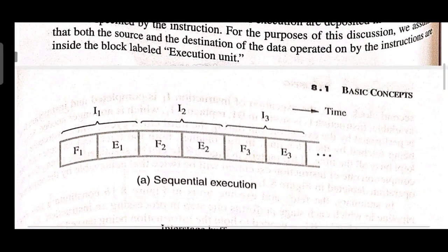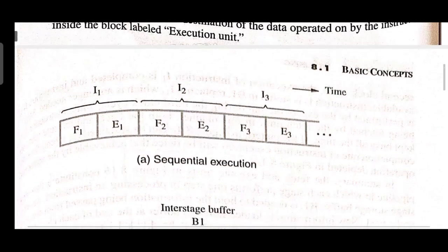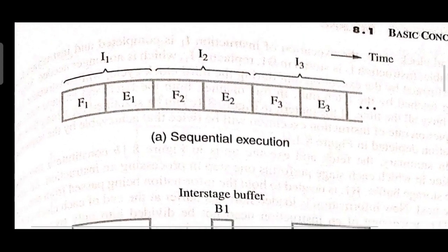This is the sequential execution diagram. F stands for fetch and E stands for execution — these are the two steps in executing an instruction. F1 and E1 represent fetching and executing instruction 1, marked as I1. After F1 and E1 complete, instruction 2 begins: F2 followed by E2. Then instruction 3 begins: F3 followed by E3. As you can see in the timeline, this is sequential — one after another.